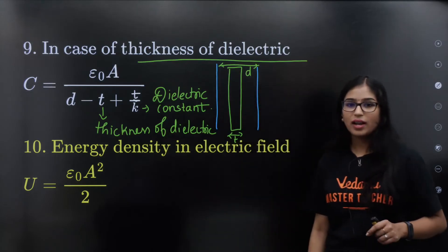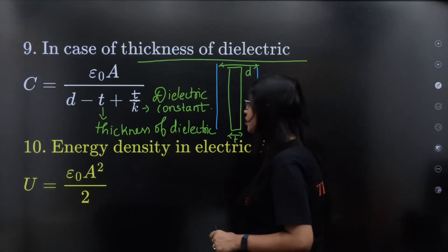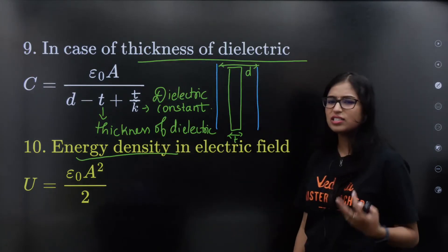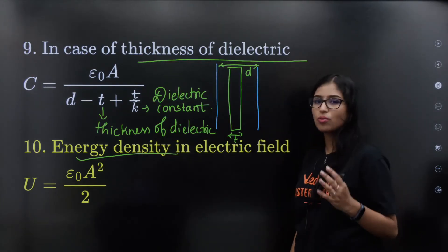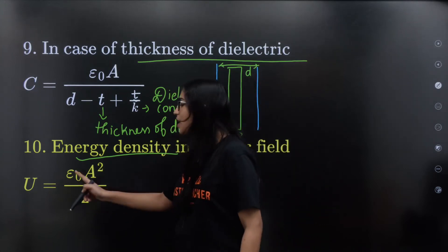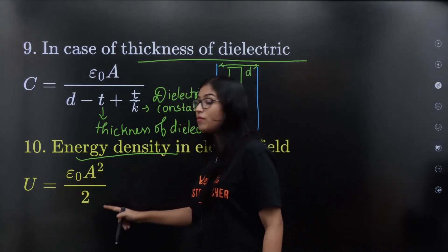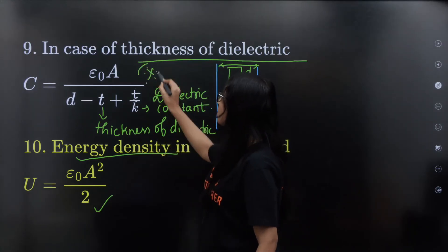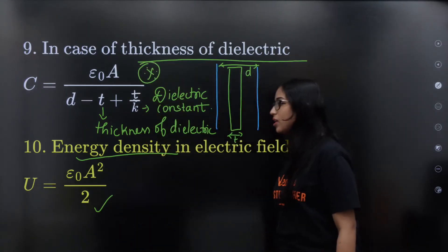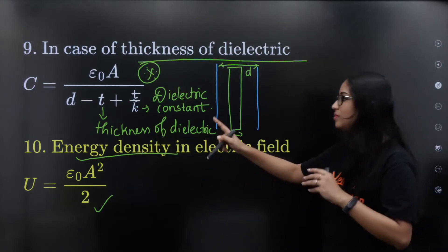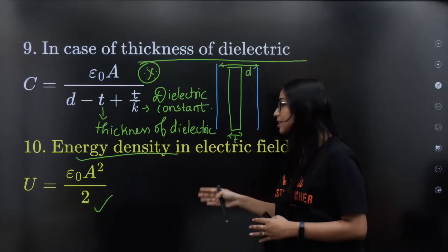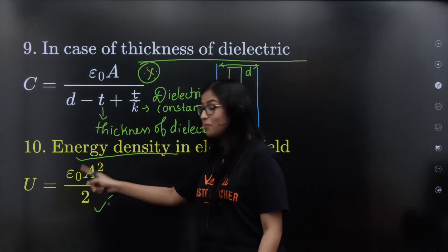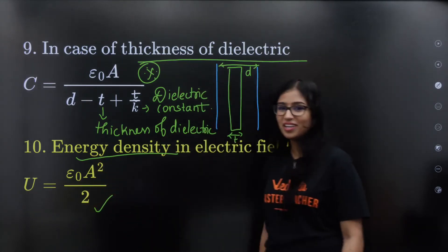Energy density in an electric field: energy per volume. U is equal to ε₀E² divided by 2. This is one important formula for energy density in an electric field.